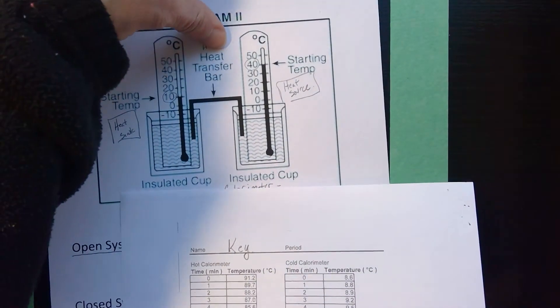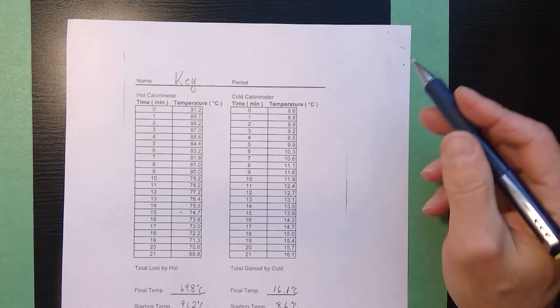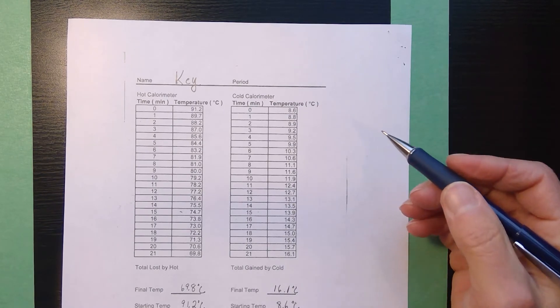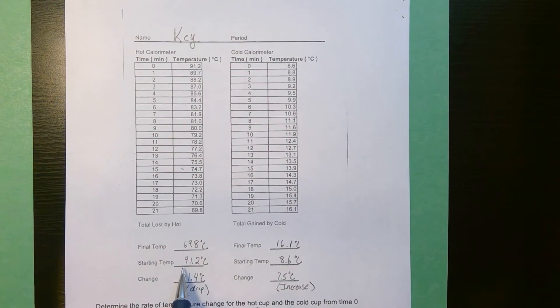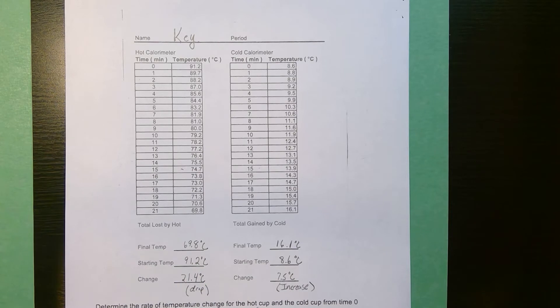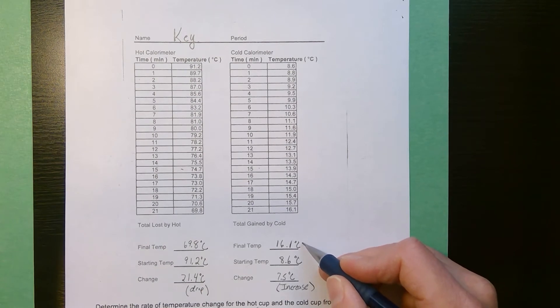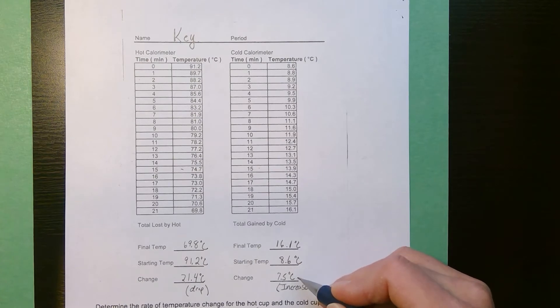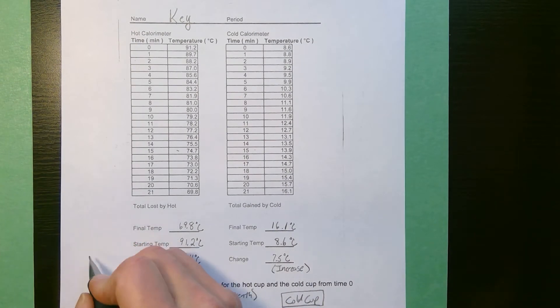All right here is the data that we collected the other day in class. The vernier temperature probes are far more sensitive and far more accurate than anything we could measure. So you'll see this class did 21 minutes of temperature readings for the hot cup and the cold cup. Looking at this you have 91.2 down to 69.8 so our hot cup or our heat source saw a drop of 21.4 degrees celsius. The cold cup started at 8.6 but only went up to 16.1 so our cold cup had a change of 7.5 degrees, it increased. So the heat source lost energy, the heat sink gained energy, but there was significantly more lost by the heat source than by the heat sink, so this would definitely be an example of an open system.